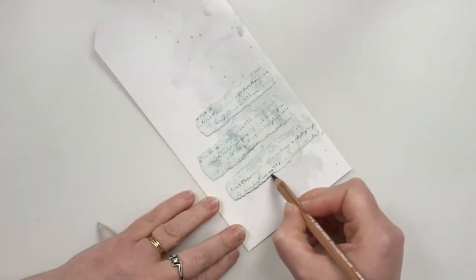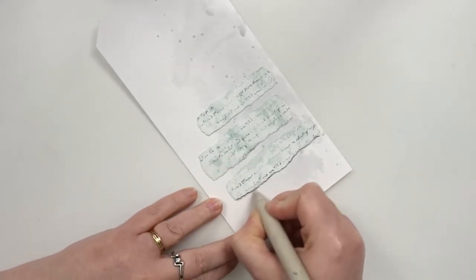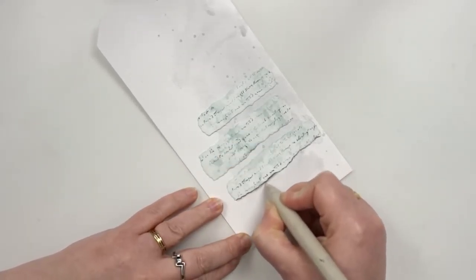I have glued down my strips on my background and to get them to stand out a bit more, I'm just shading them using a charcoal pencil and a paper stump.